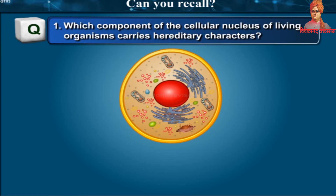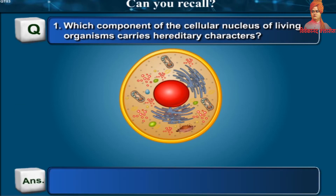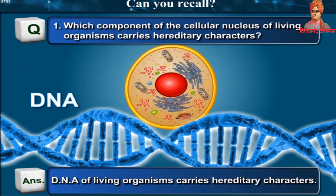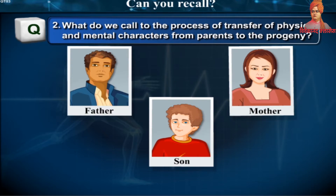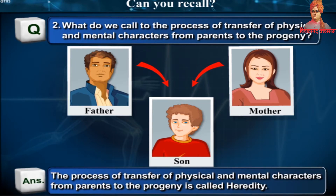Which component of the cellular nucleus of living organisms carries hereditary characters? The process of transfer of physical and mental characters from parents to the progeny is called heredity.